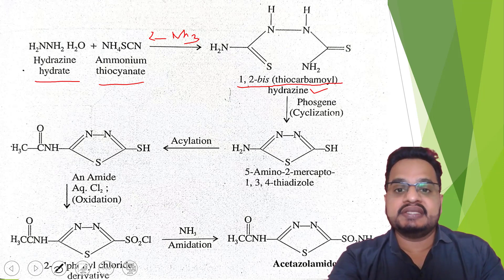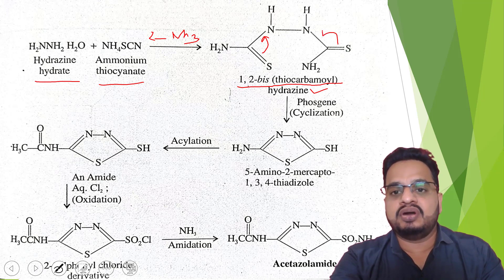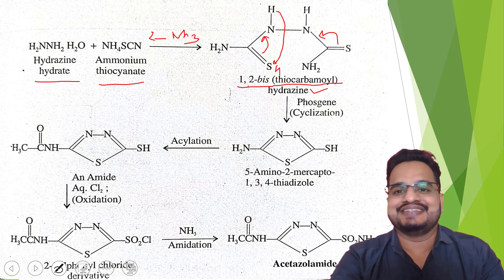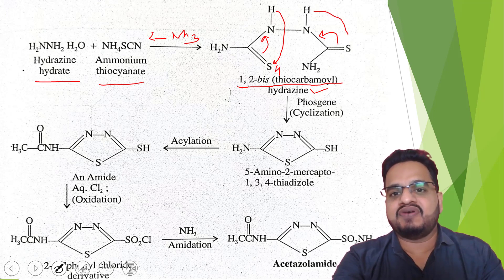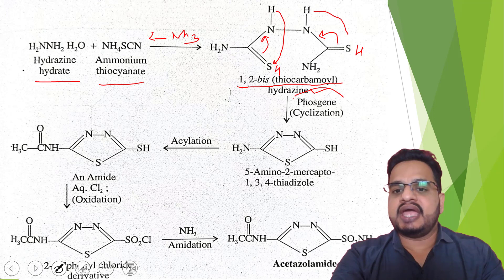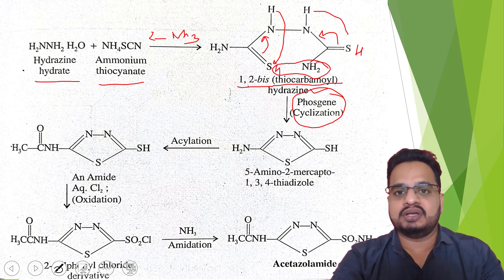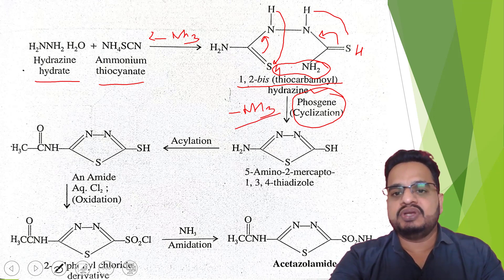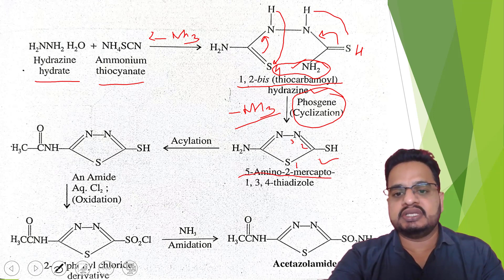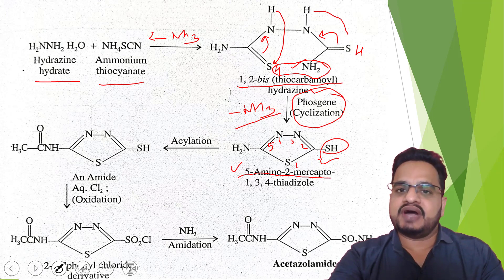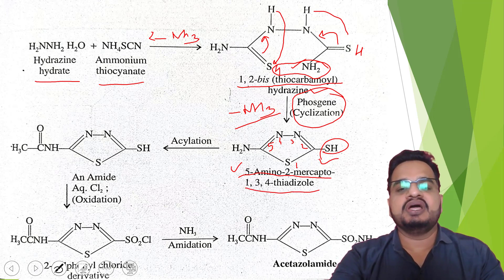Next, the double bond will be shifting, and this proton will shift forming SH. Then it is going to react with phosgene — that is, cyclization is going to take place. This NH2 and this proton will be removed as NH3 — ammonia will be removed. Once this ammonia is removed, cyclization takes place to get 5-amino — positions 1, 2, 3, 4, and 5 — so it is 5-amino, 2-mercapto, 1,3,4-thiadiazole.